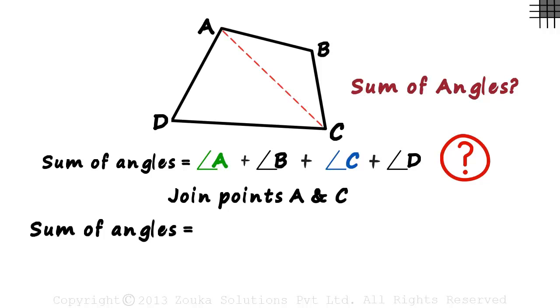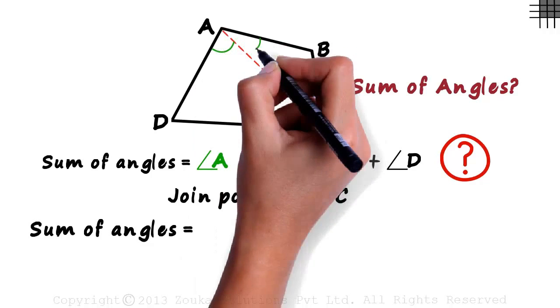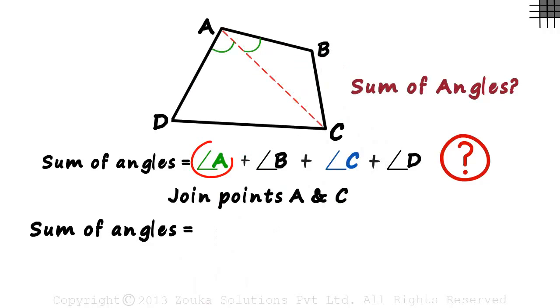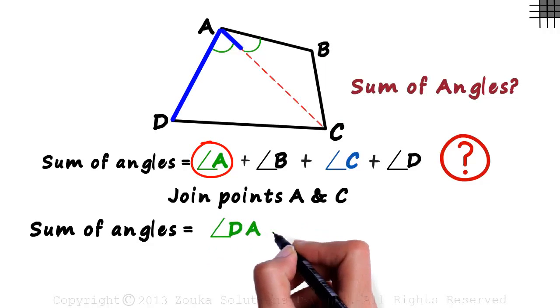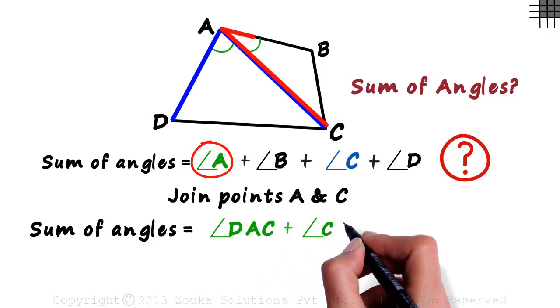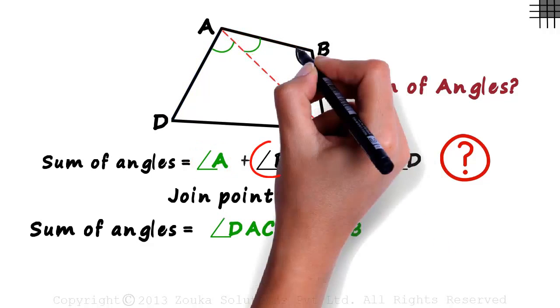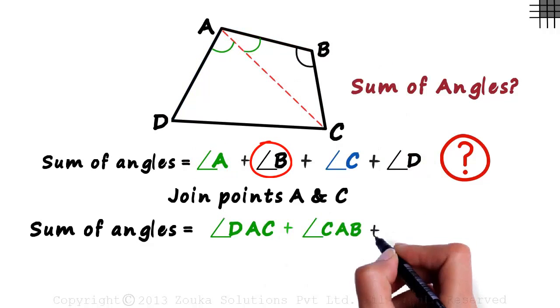Let's try to write the sum in a different way. Angle A will be the sum of these two angles. It means angle A can be written as angle DAC plus angle CAB. Angle B is not split, so we write it as is.